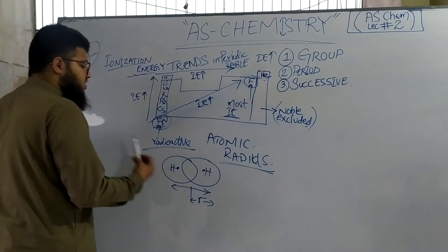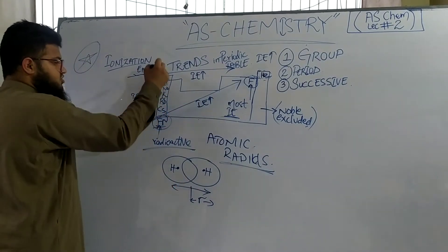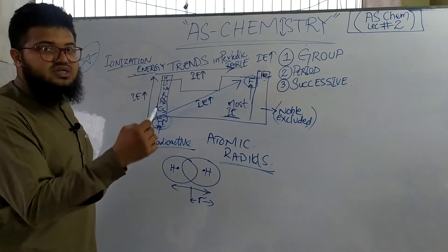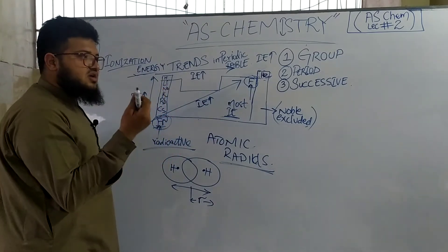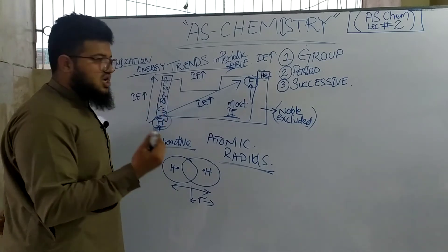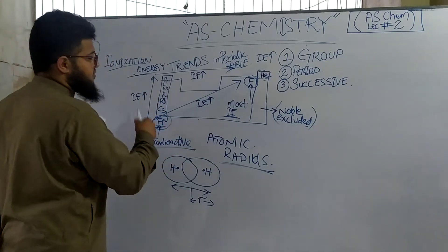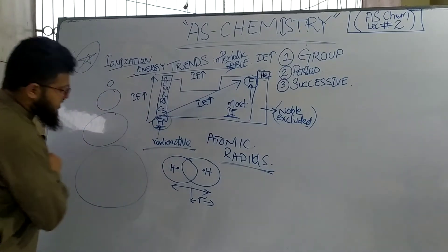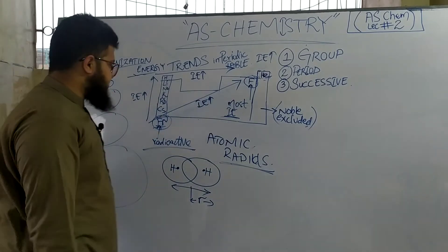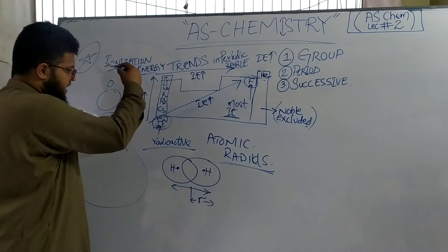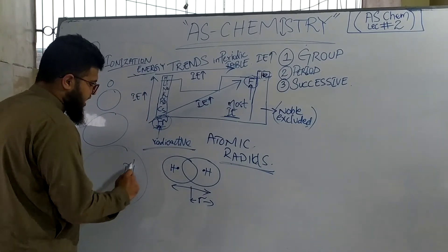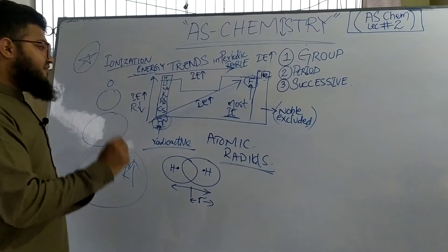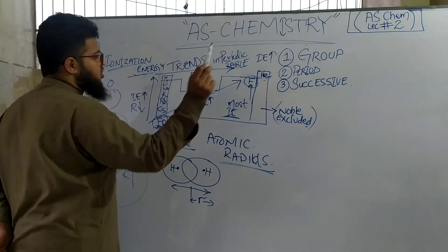Looking at radii and going down the group, the number of electron shells increases — lithium has two shells, sodium has three, potassium has four, and so on. As you go down the group, the size of the atoms increases. So going down the group, the radius increases, and going up the group, the radius decreases.